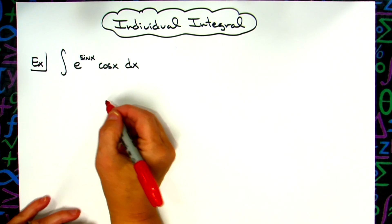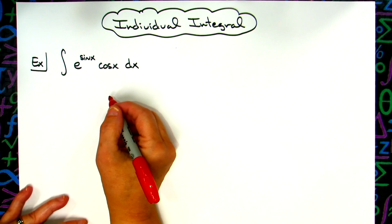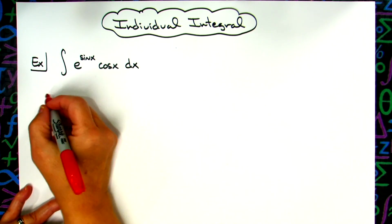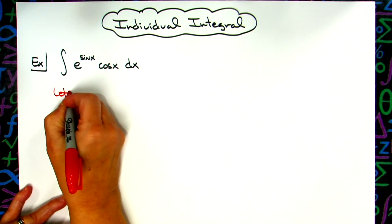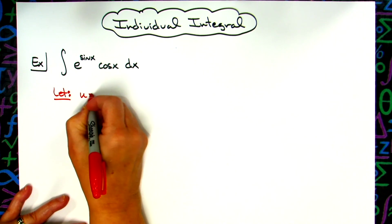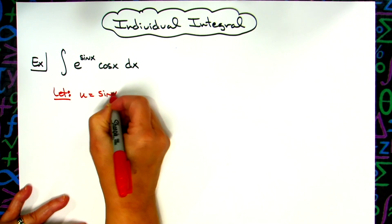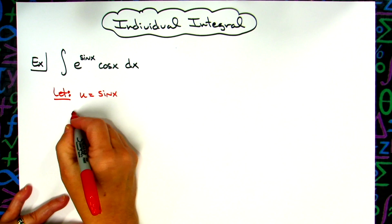In this video we're going to work out a u-substitution type of integral. We're going to start by letting our u be sine x. When we do that and then take the derivative of both sides, we'll have...